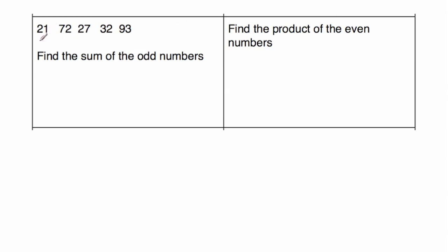We have got 21, that's odd. We have got 72, that's even. We've got 27, that's odd. 32, that's even. And 93, that's odd. So we're going to find the sum of the odd numbers. So let's write them in a column and add them up. So 93, 27 and 21. We're going to add them together and see what we get.